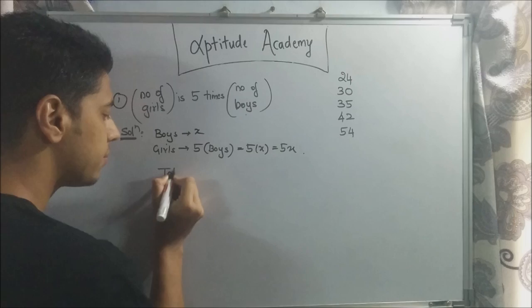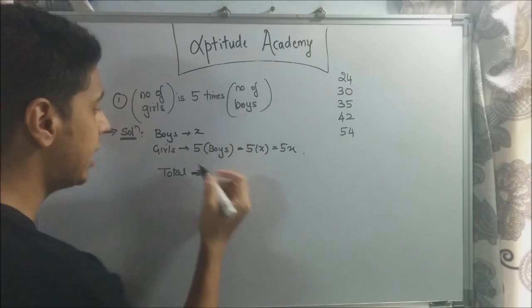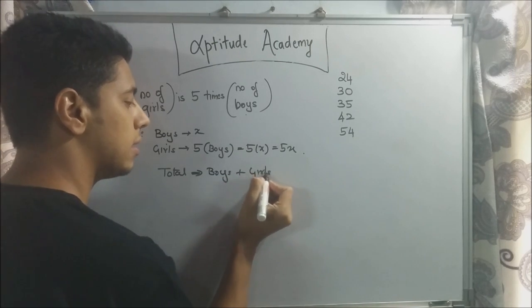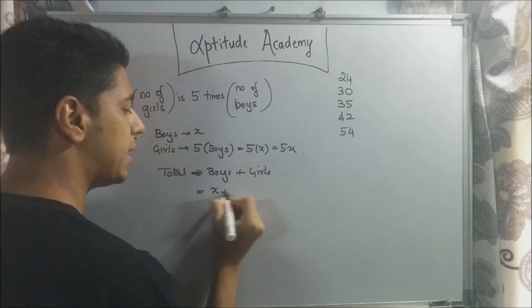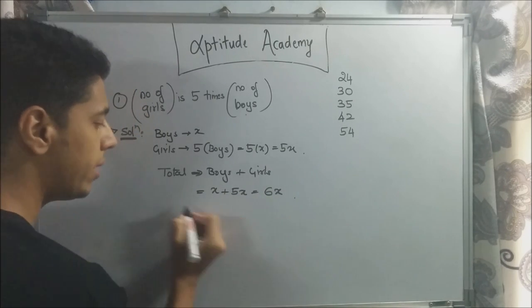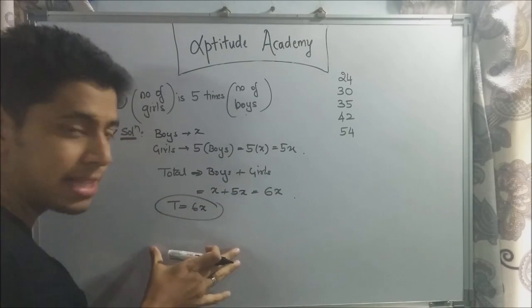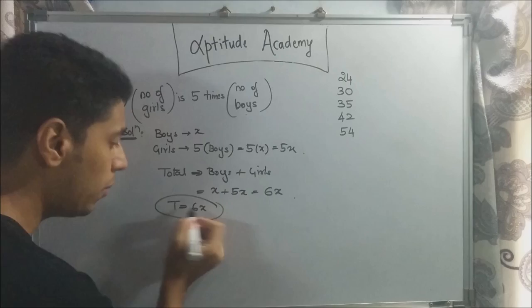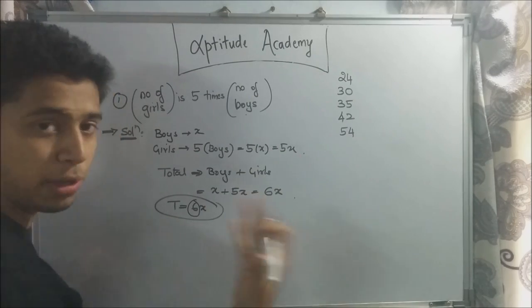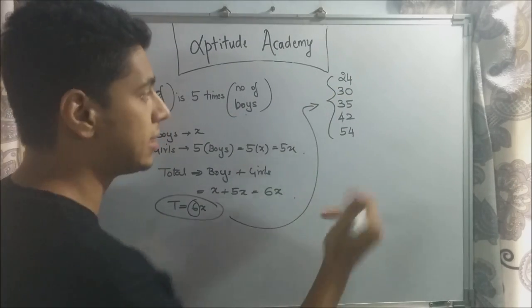Now the total, what we are asked here will be the sum of the boys and the girls. So boys plus girls. So this is equal to x plus 5x, so it's equal to 6x. So now we know that the total is equal to 6x. What this implies is that the total will be divisible by 6. That is, the total number of students is a multiple of 6. So now you just need to go to your options and see which of the following is not a multiple of 6.